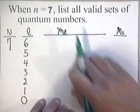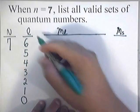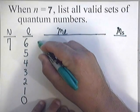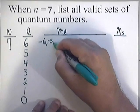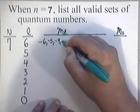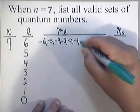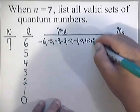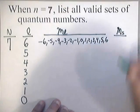Your ml is basically starting with this number, except it will run from negative 6, negative 5, negative 4, negative 3, negative 2, negative 1, 0, 1, 2, 3, 4, 5, and 6.